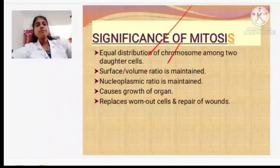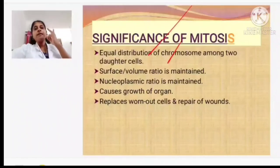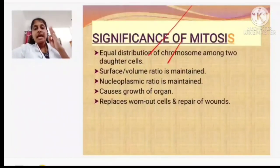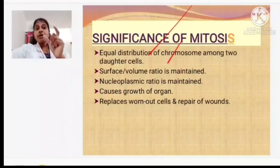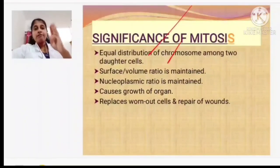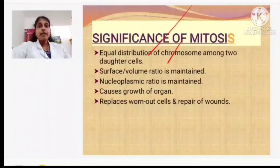In summary: the cell cycle is divided into interphase and M phase. Interphase has G1, S, and G2 phases. The M phase has karyokinesis and cytokinesis. Karyokinesis has four stages: prophase, metaphase, anaphase, and telophase. After nuclear division, cytokinesis divides the cytoplasm — from one cell, two cells are formed, each with the same chromosome number. That is why mitosis is called equational division. In the next class, we will discuss meiosis.